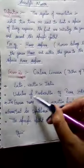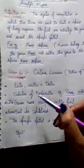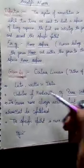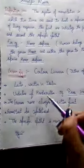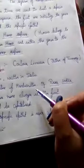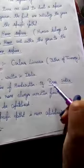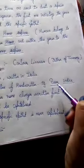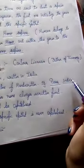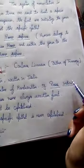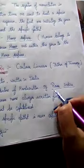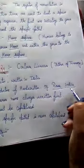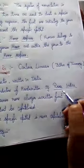If we are writing them in a notebook by hand, if they are handwritten, then they must be underlined. For example, for rose — 'Rosa indica' — you can see that the genus and species are underlined separately.